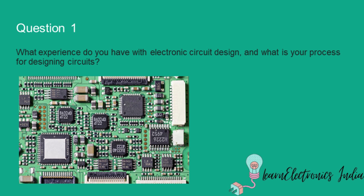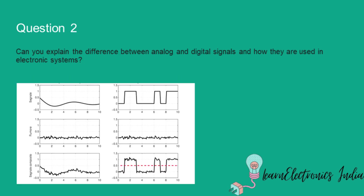The second question is: can you explain the difference between analog and digital signals and how they are used in electronic systems? It is a very basic question, but it is still asked in a lot of interviews. You are expected to answer in detail — what exactly are analog and digital signals, and how are they used in electronic systems — in as practical a manner as possible.